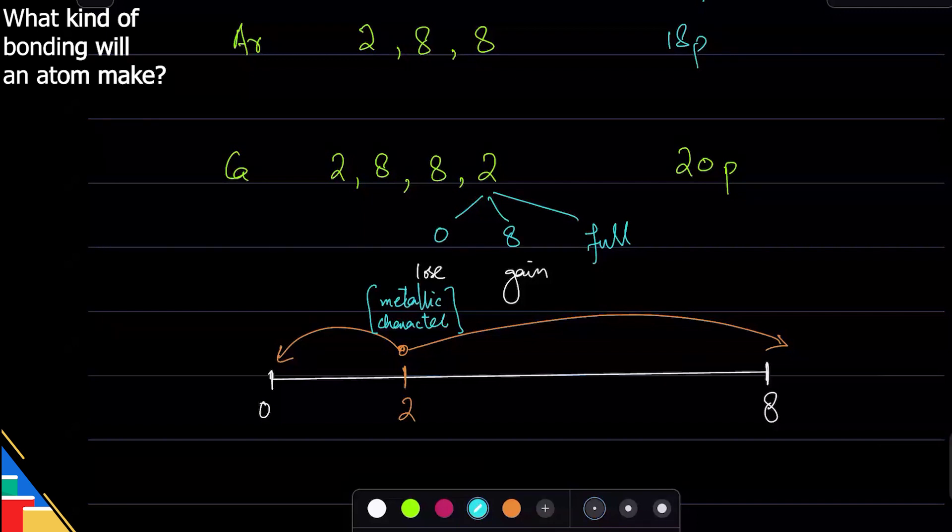What's metallic character? The ability to lose electrons. The examiner will use this word, so you should know metallic character. So this tells me that one option is they lose electrons and they get to zero.